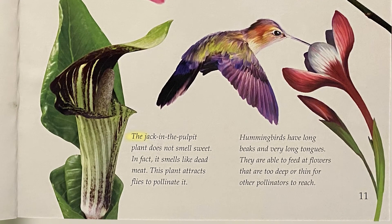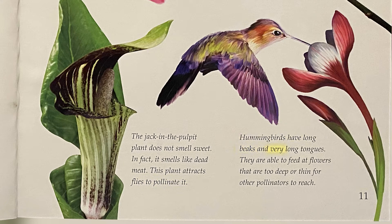The jack-in-the-pulpit plant does not smell sweet — in fact, it smells like dead meat. This plant attracts flies to pollinate it. Hummingbirds have long beaks and very long tongues. They are able to feed at flowers that are too deep or thin for other pollinators to reach.